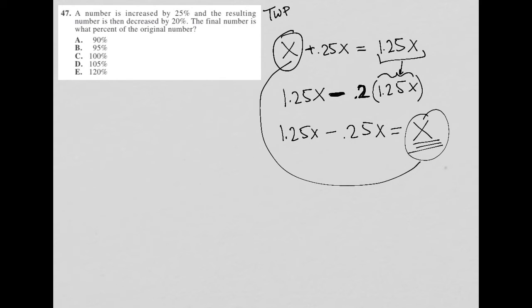So the final number is what percent of the original number? Well, it's 100% of the original number. If X were 100, and here's where you can make things a little bit more concrete. If this feels too abstract, I can say, okay, a number is increased by 25%. They didn't give me a number.